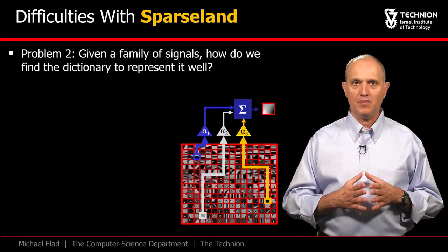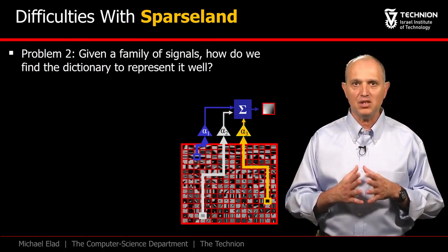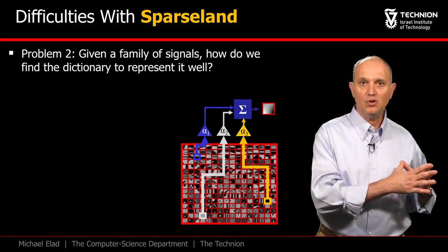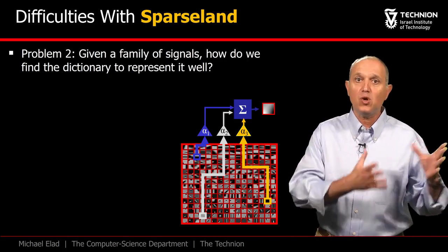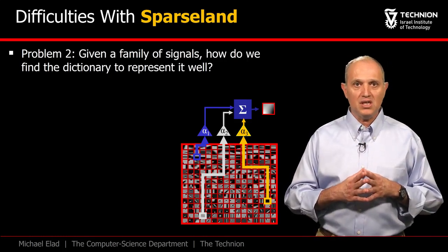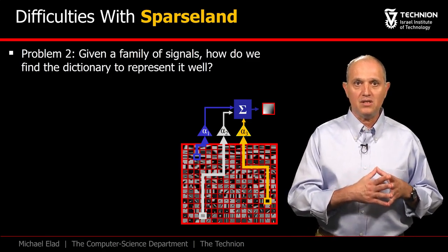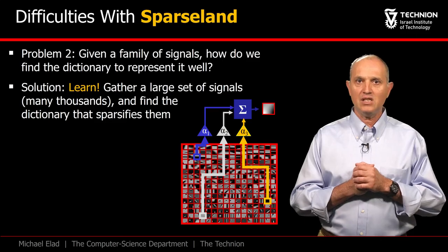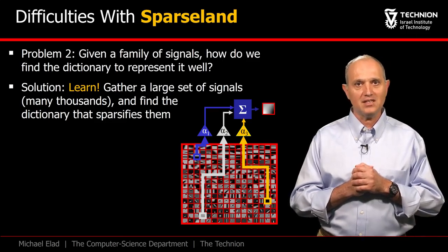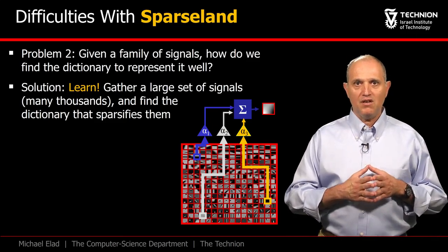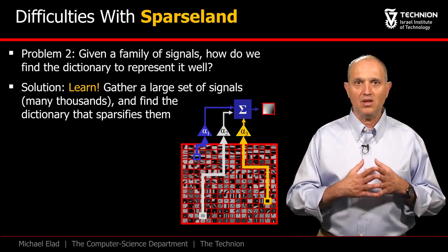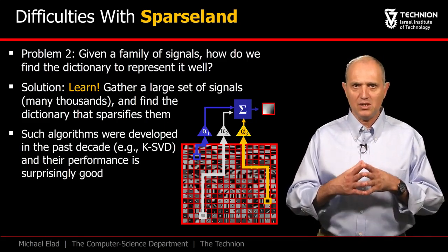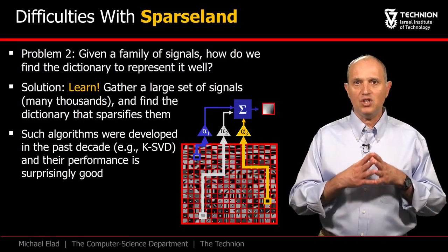Let's move to describe a second difficulty with Sparsland: the need to obtain the dictionary. One researcher is using Sparsland for handling natural images, another uses it for audio signals, and a third is aiming to predict the stock market with it. Clearly, each signal source needs a different dictionary. The answer that Sparsland gives is learning — using a large set of signal examples from the data source and finding the dictionary that best serves them, leading to the sparsest possible description. In our course, we will meet several such algorithms, such as the MOD and the KSVD, and see how they achieve their goal.